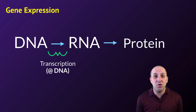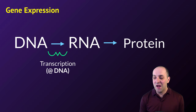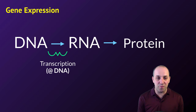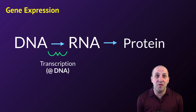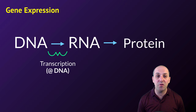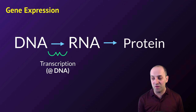In transcription we take DNA sequence information and convert it into RNA sequence information. This happens wherever the DNA is inside of cells. In eukaryotes it'll happen in the nucleus, and in prokaryotes it will happen in the nucleoid region of the cytoplasm.